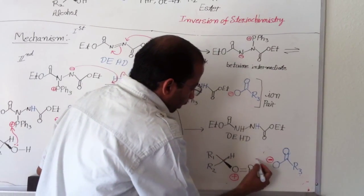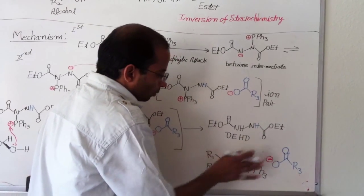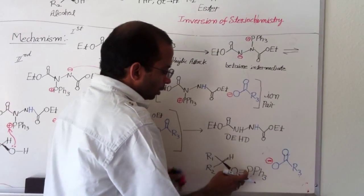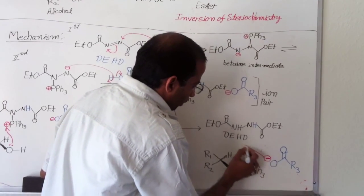So, this carboxylate cannot attack on this carbon on the top from the plane. Because, this is the big molecule. This is the oxide and triphenylphosphine is very big, which makes a hindrance. So, it attacks from the back side.